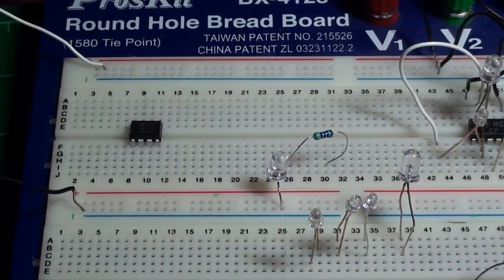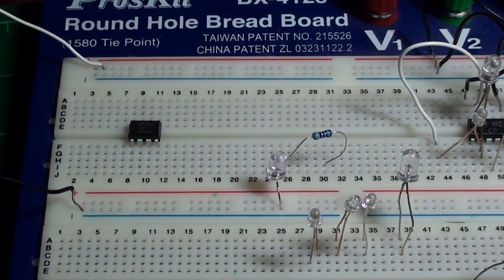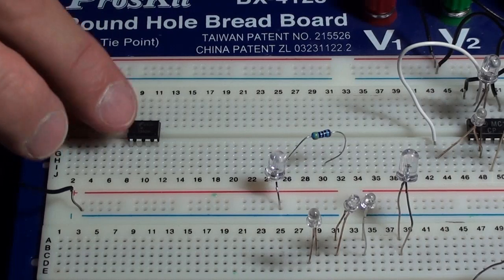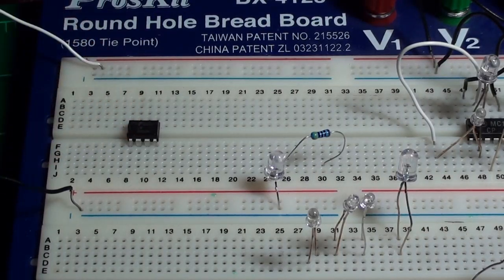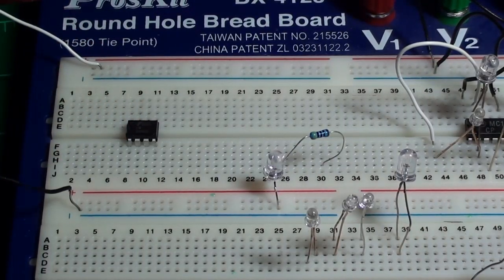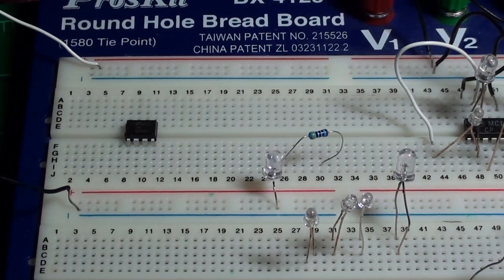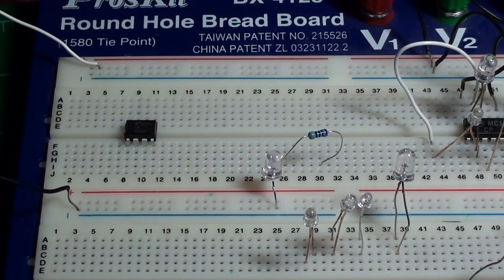Alright everybody, we're going to work on putting together the 555 timer chip circuit. Remember this notch right here denotes where pin number one is, pin number two, pin number three, pin number four. I'm going to put that diagram up on the monitor for you.